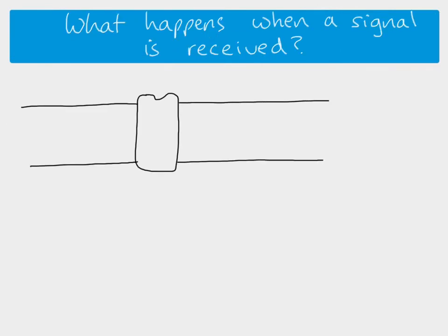What you can see here is a phospholipid bilayer and this is a receptor molecule. When a signaling molecule arrives at the cell, depending on what kind of signaling molecule it is, a couple of things could happen.